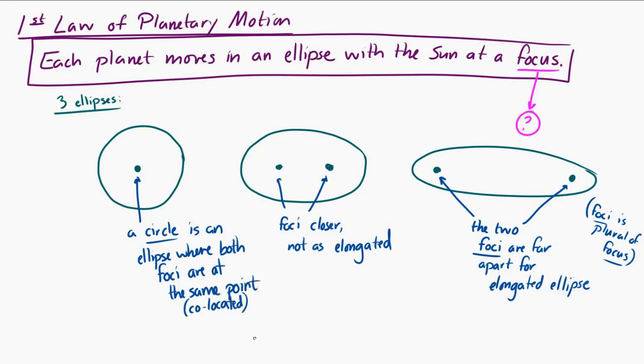That's how planets move around the sun. They move in an ellipse with the sun at one of the foci. And I'm also going to show here, this is the semi-major axis of an ellipse. That'll come up later.